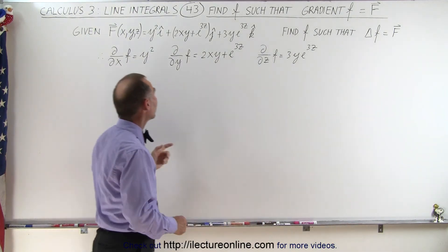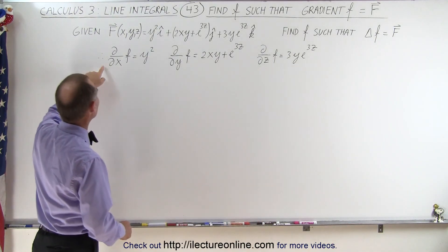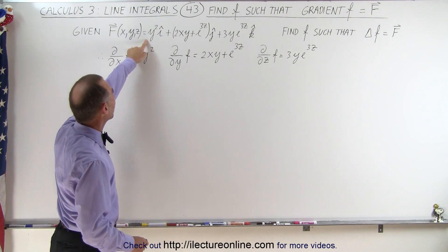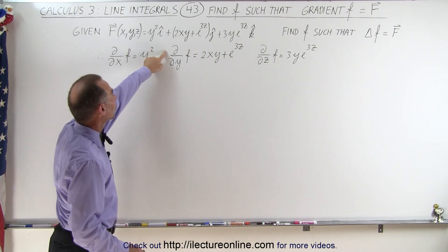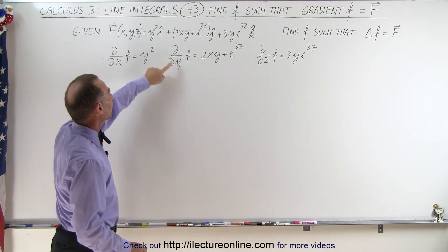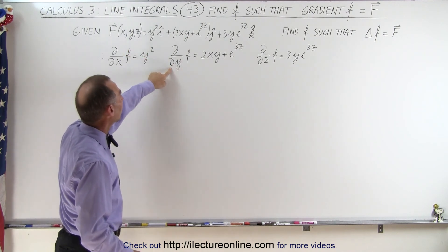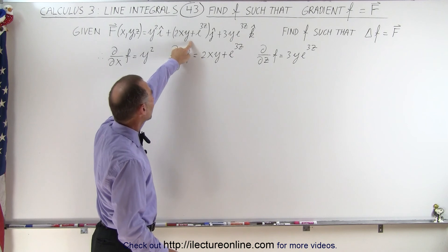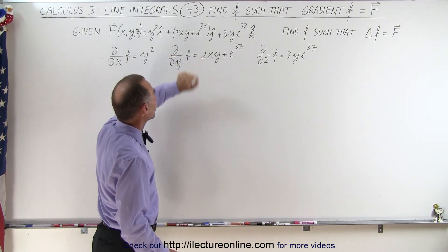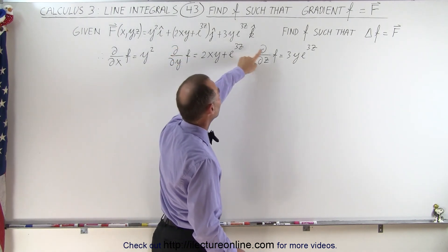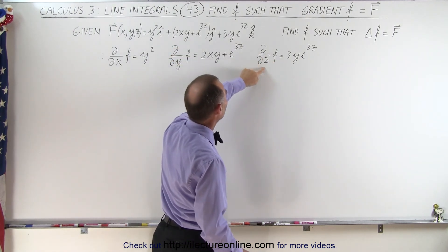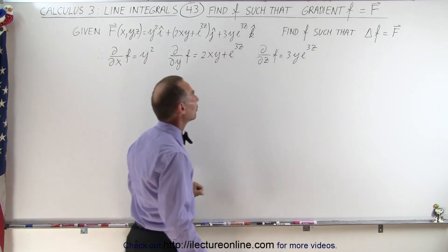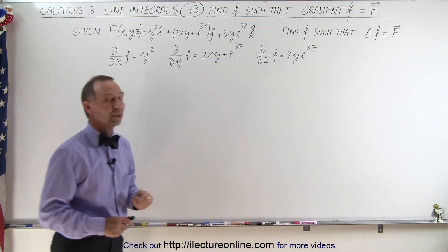This means that the partial derivative with respect to X of the function equals Y squared, the partial derivative with respect to Y of the function should give us the J component, and the partial derivative of the function with respect to Z should give us the K component of our vector field.